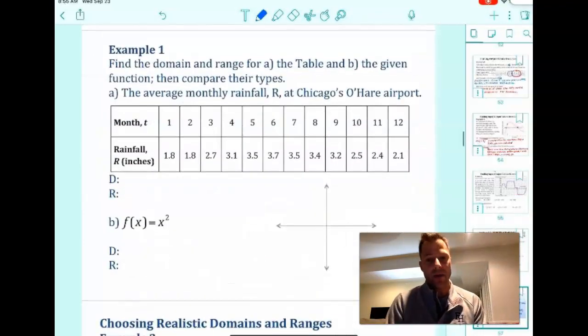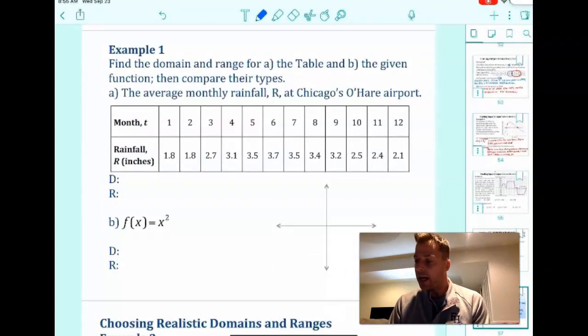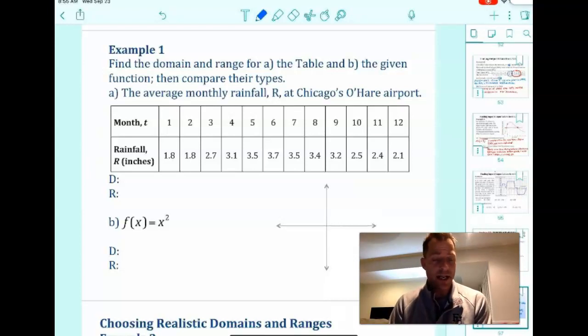Example one, find the domain and range for A, the table, and B, the given function. Then compare their types. The average monthly rainfall, R, at Chicago's O'Hare Airport. So there's our table. Here's the average monthly rainfall. The rainfall, R, depends on what month it is.